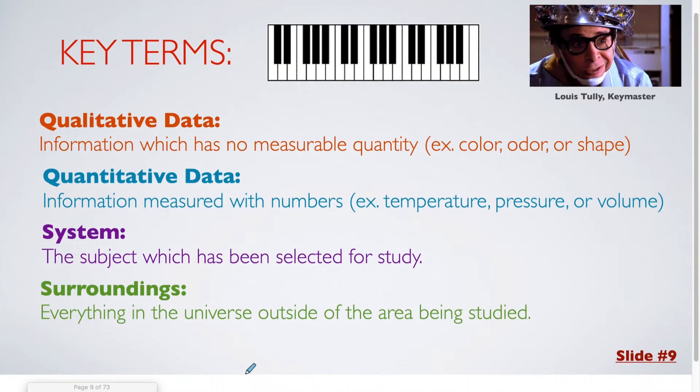Here are some key terms. Qualitative data. The word qualitative is very similar to quality. This is information which has no measurable quantity, so we are not dealing with any numbers. Examples of qualitative data that we could take in an experiment could be the color, odor, or shape of an object. Quantitative data sounds very similar to quantity, or dealing with numbers. So, this is information which is measured in numbers. Examples could be something like temperature, pressure, or volume.